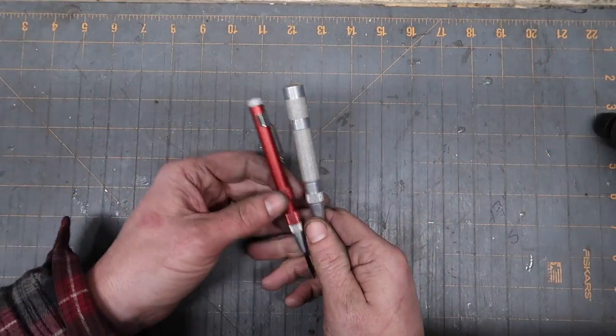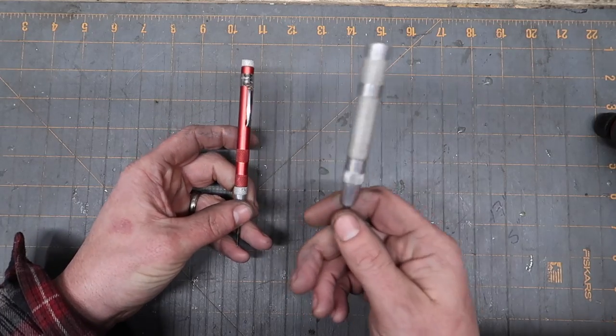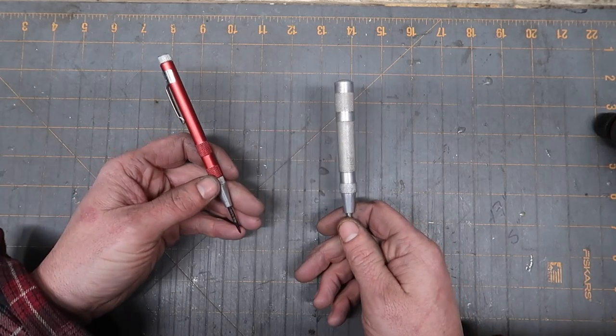Let's take a look at Automatic Center Punches. So here's two samples of an Automatic Center Punch. It's a center punch, just as the name implies, but it's automatic.